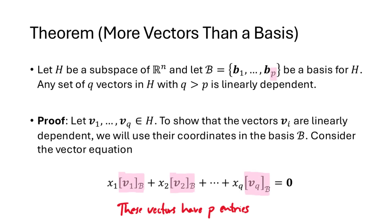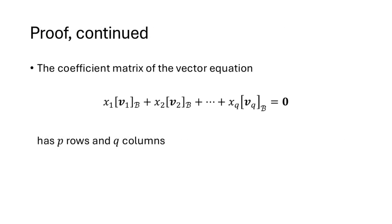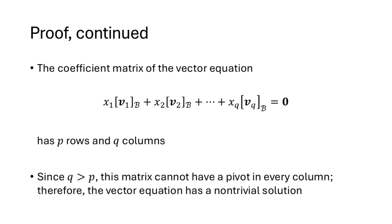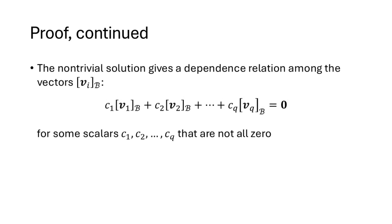Notice that the coordinate vectors have P entries because the basis has P vectors in it. So the coefficient matrix of this homogeneous vector equation has P rows and Q columns. But because Q is greater than P, that means this coefficient matrix has more columns than rows, and in particular it can't have a pivot in every column. That means that at least one variable must be free, which means this vector equation has a non-trivial solution.